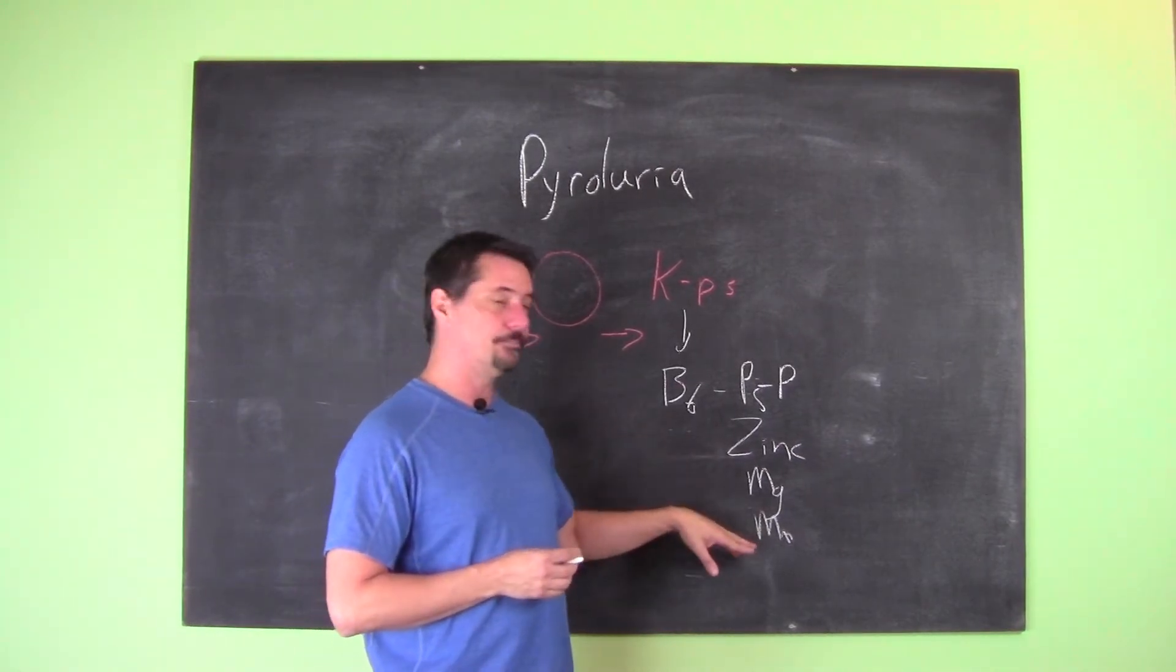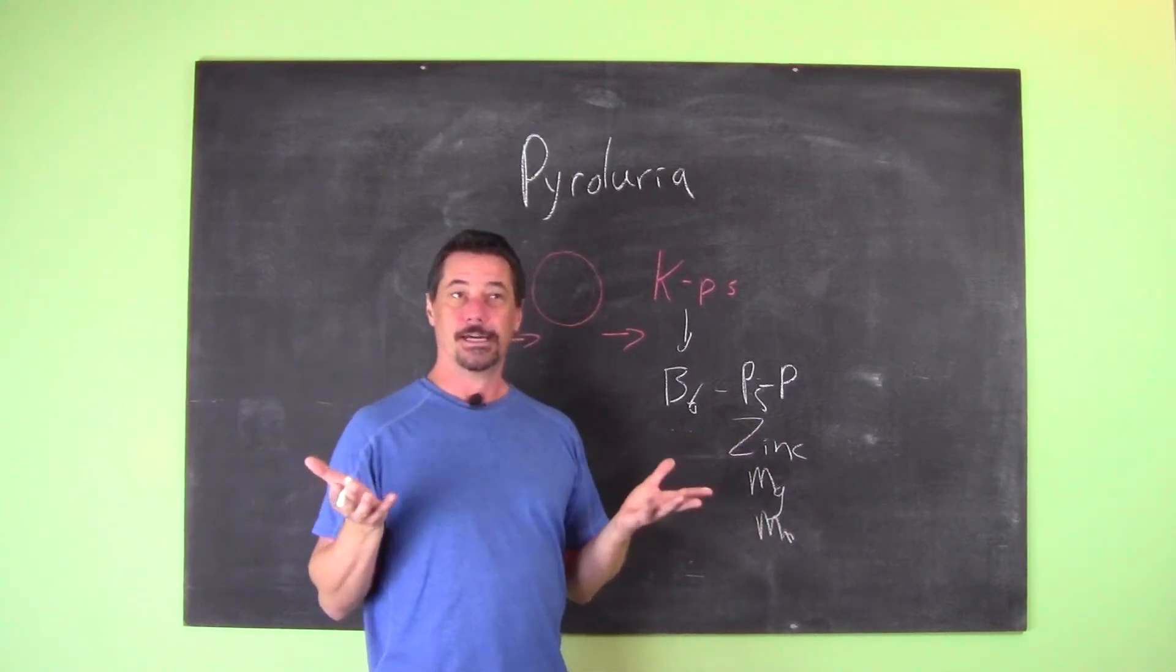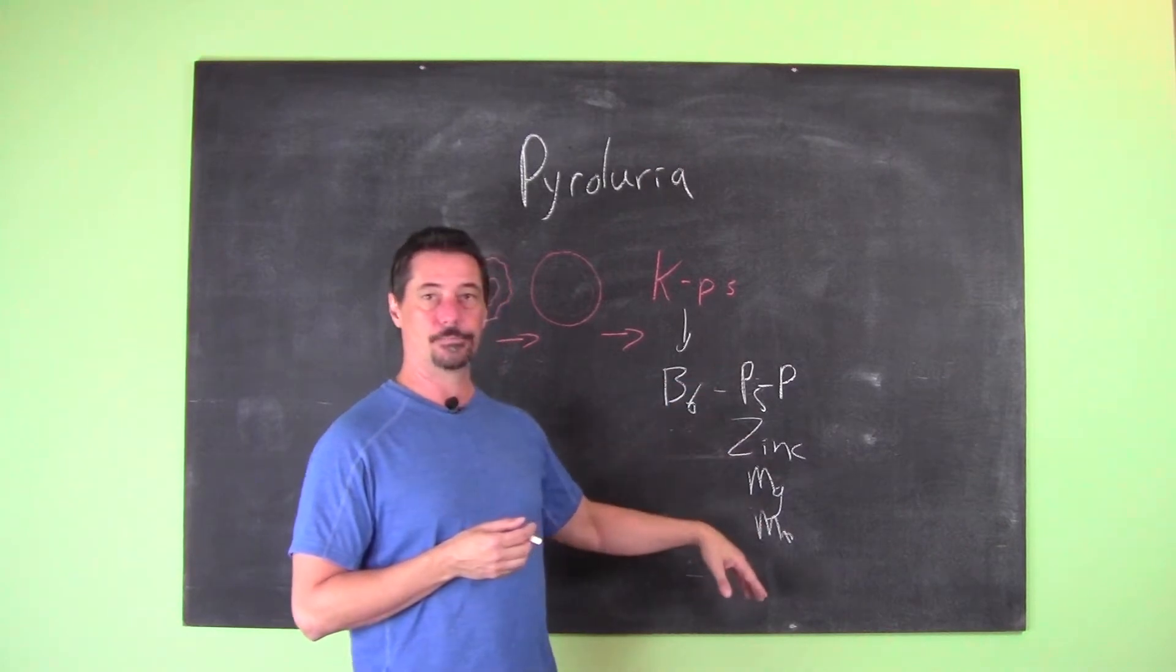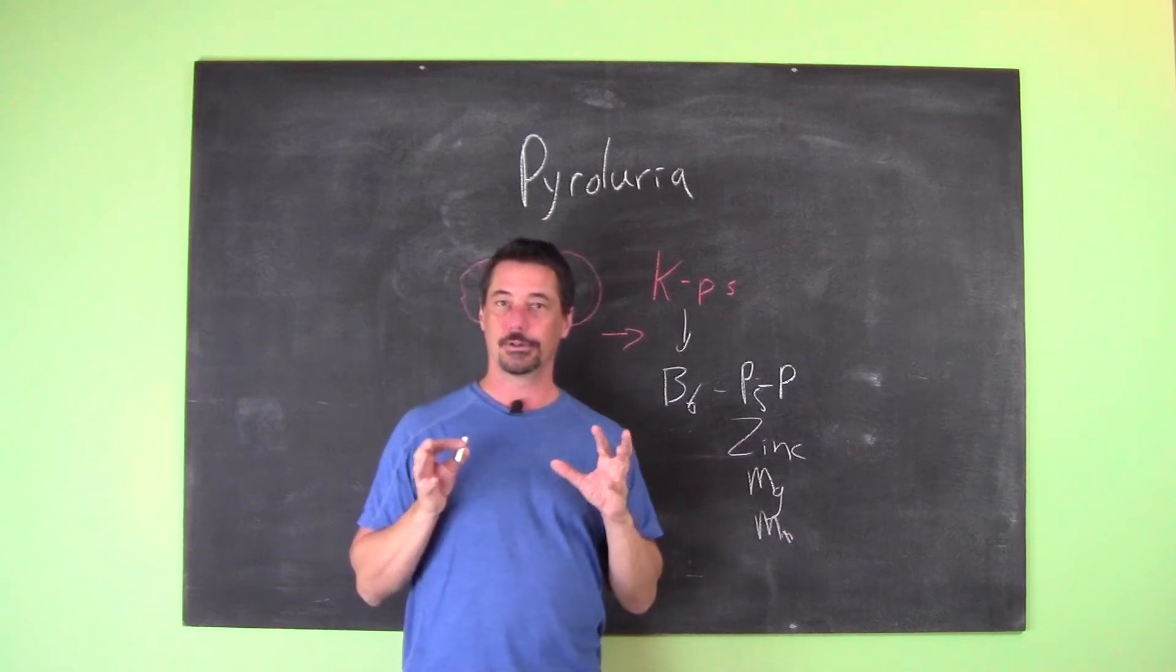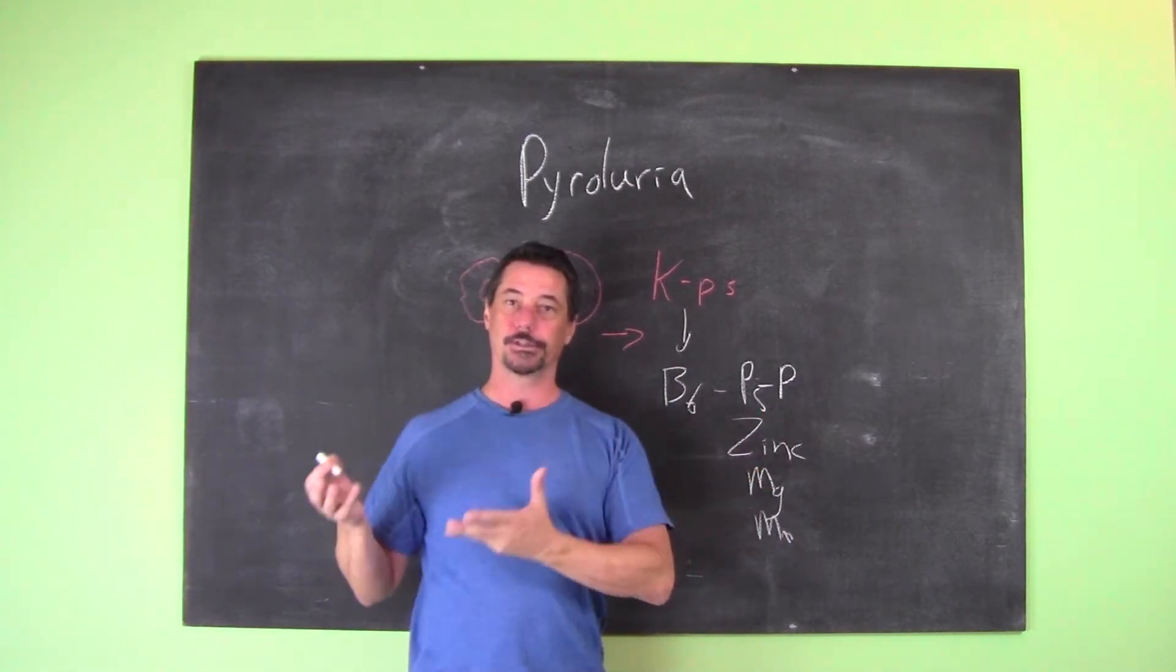Same with zinc, magnesium, manganese, and other specific nutrients. If they're bound to this KP structure, you don't have them. One of the biggest things that happens when you have a deficit of all these together is your adrenals have a hard time going from a fight-or-flight state to a rest-digest state.